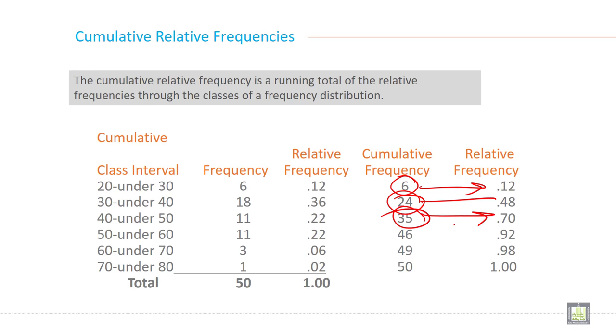35 by 50, 0.70. 46 by 50, 0.92. 49 by 50, 0.98 and 50 by 50 it is 1. So it is cumulative relative frequency. It is a running total of relative frequency through the classes of frequency distribution.